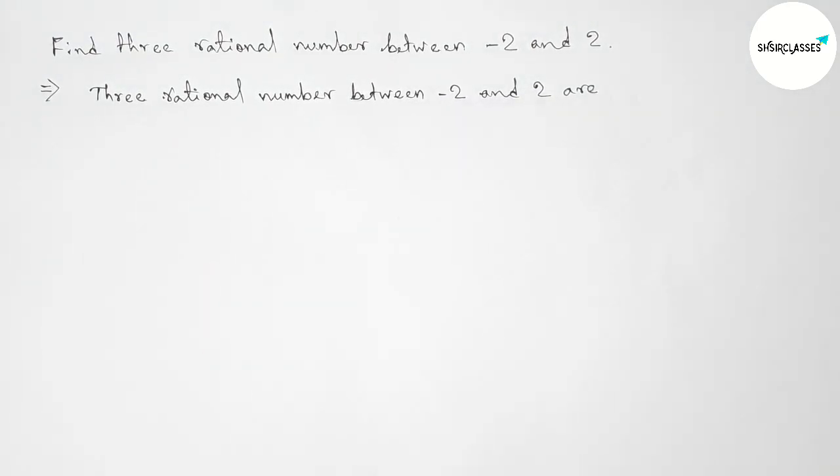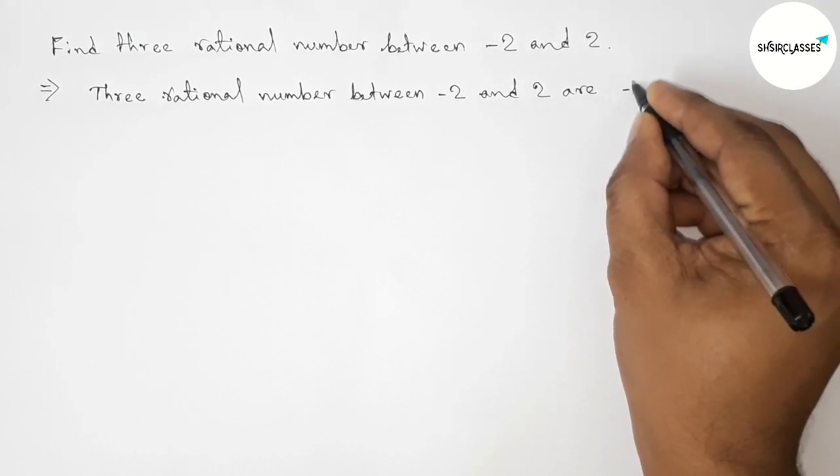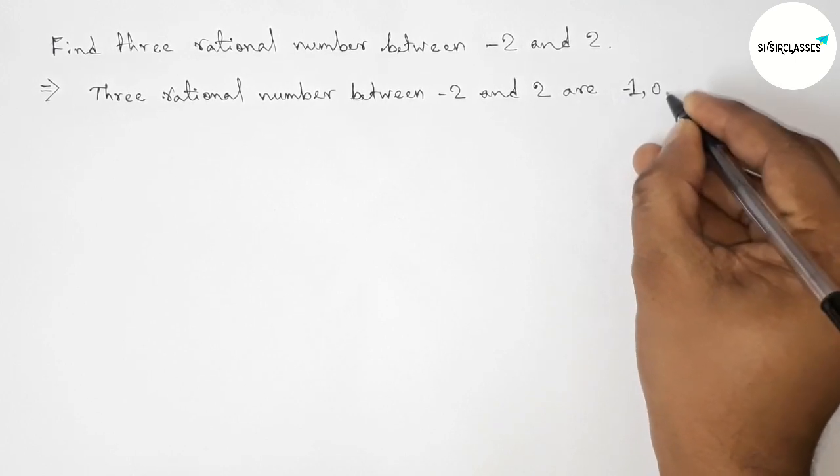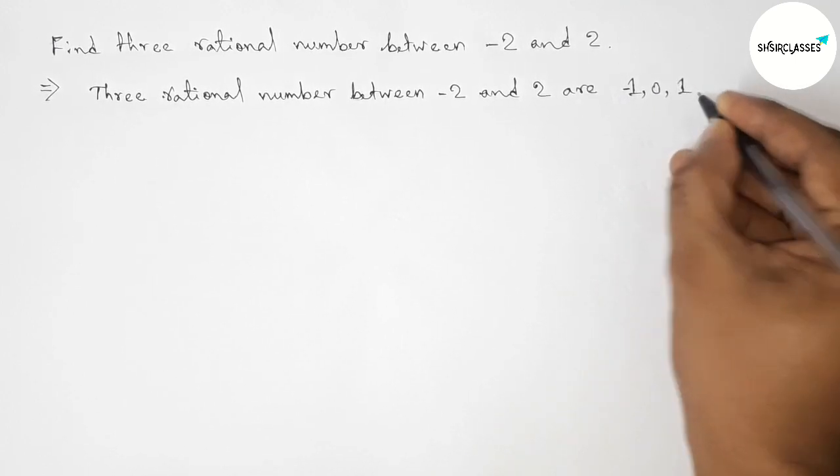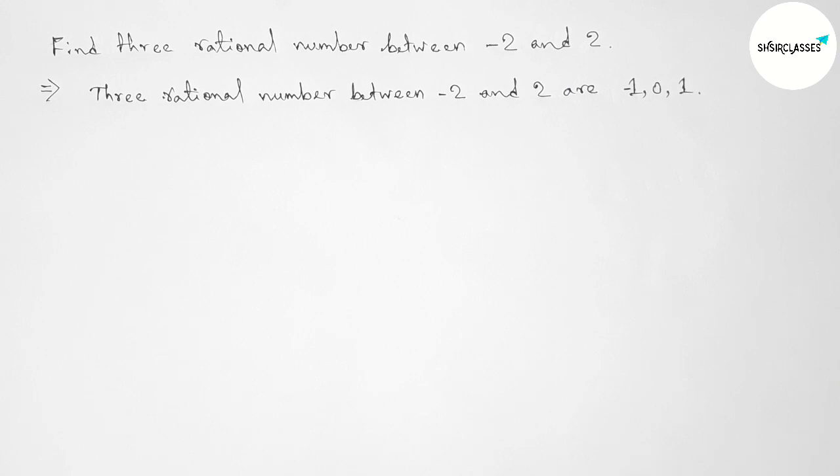So here first one will be minus one, then zero, and plus one. So minus one, zero, and one, these are three rational numbers.